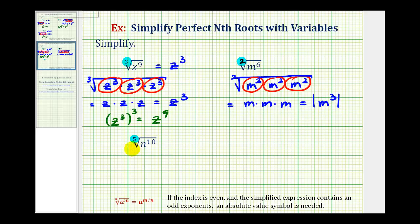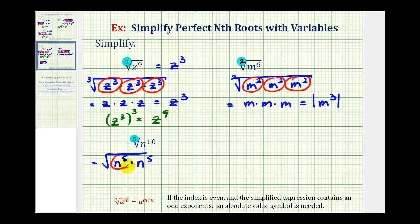For our last example, we have negative the fifth root of n to the tenth. Because the index is five, this simplifies every time we have five equal factors of n. We can write this as negative the fifth root of n to the tenth, which equals n to the fifth times n to the fifth. Each group of five equal factors simplifies to one factor of n, so this simplifies to negative n times n, which is negative n squared. And whenever the index is odd, we never have to worry about an absolute value.